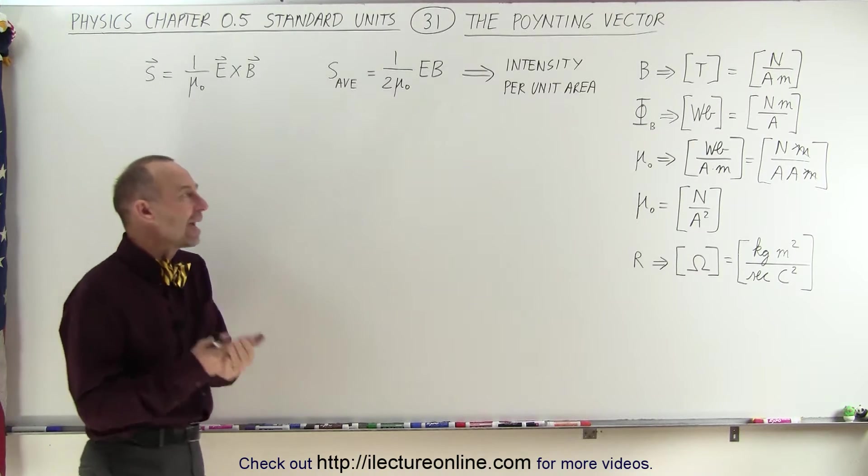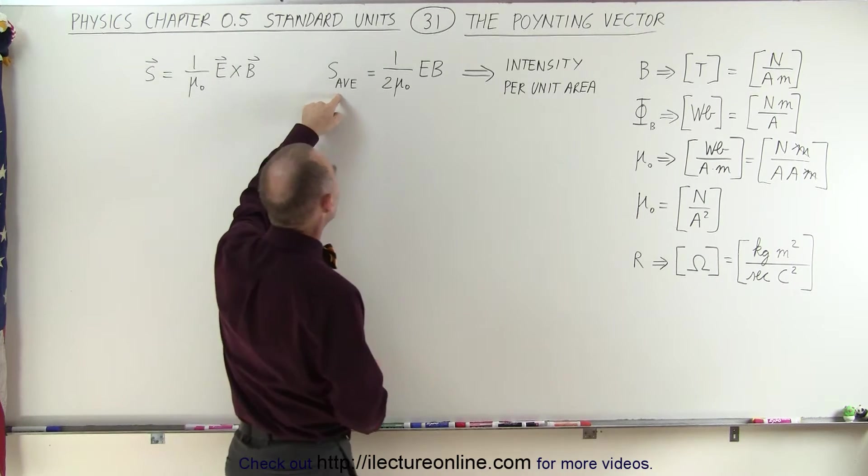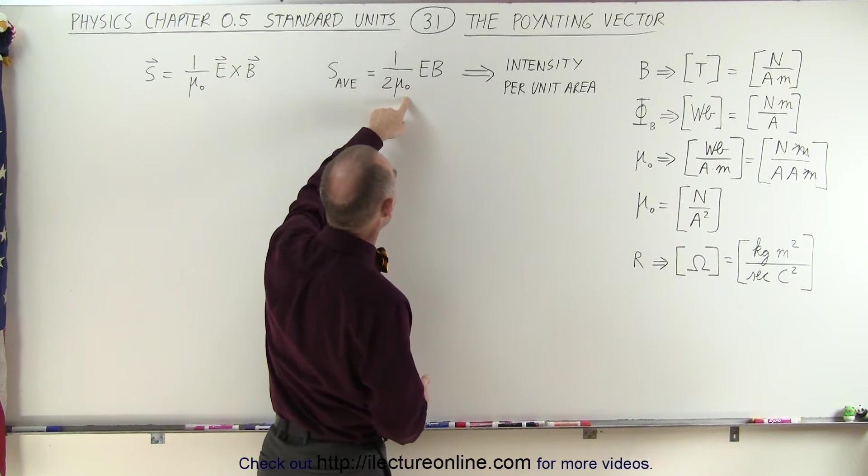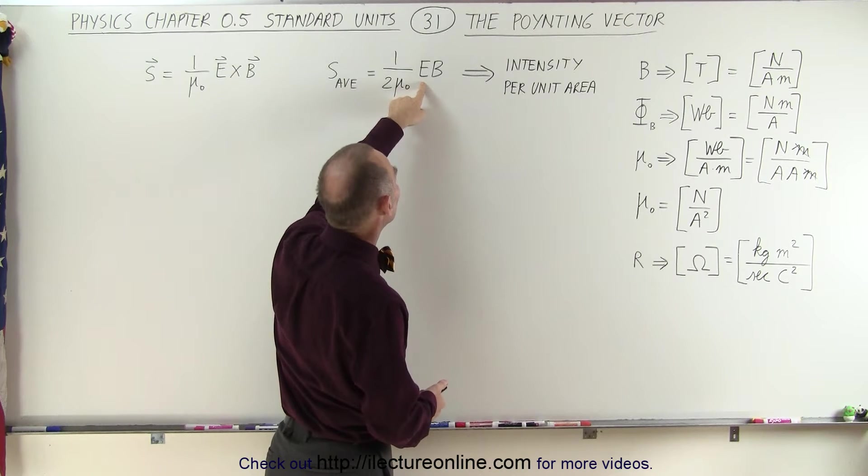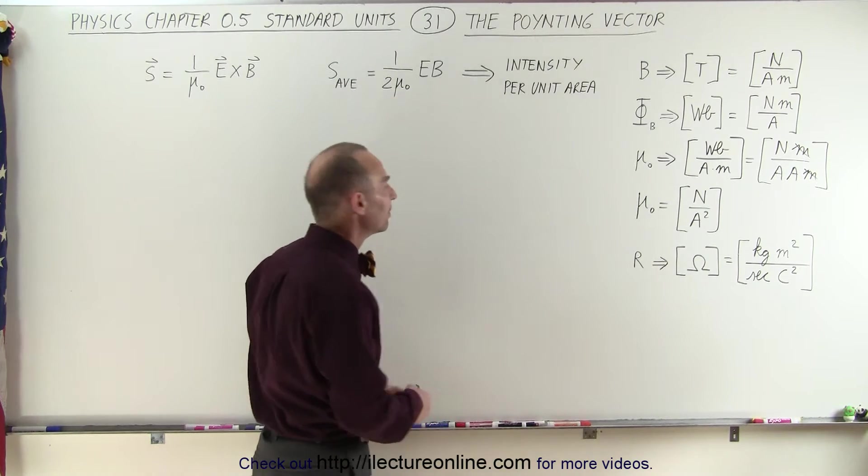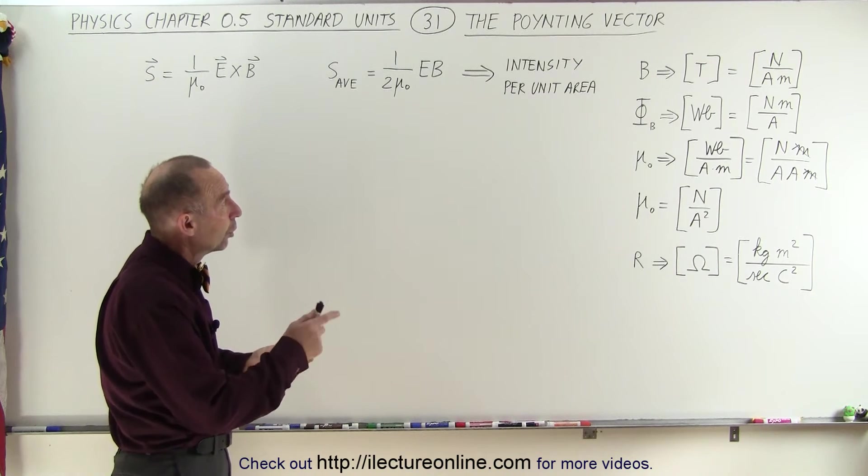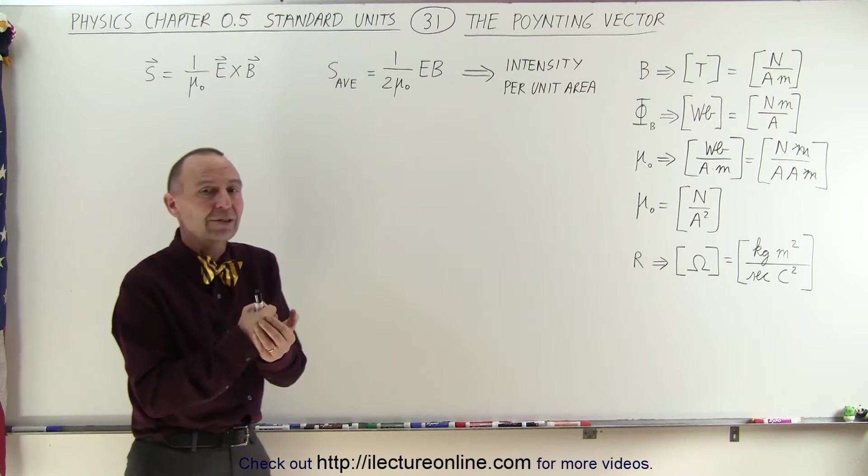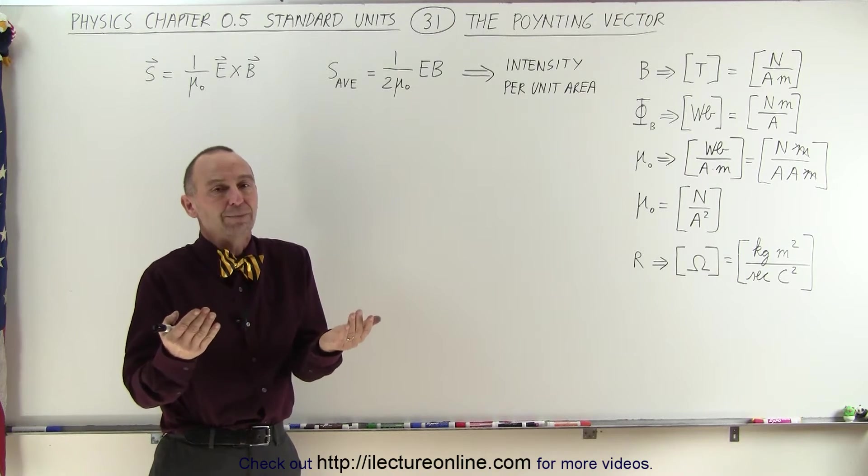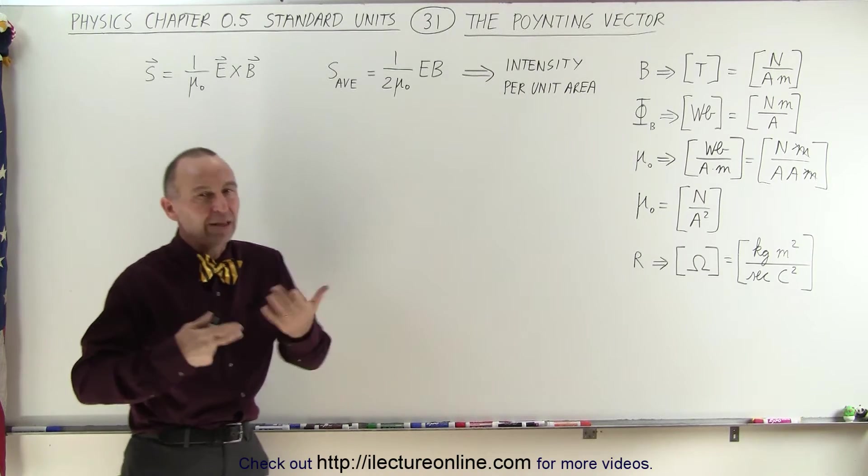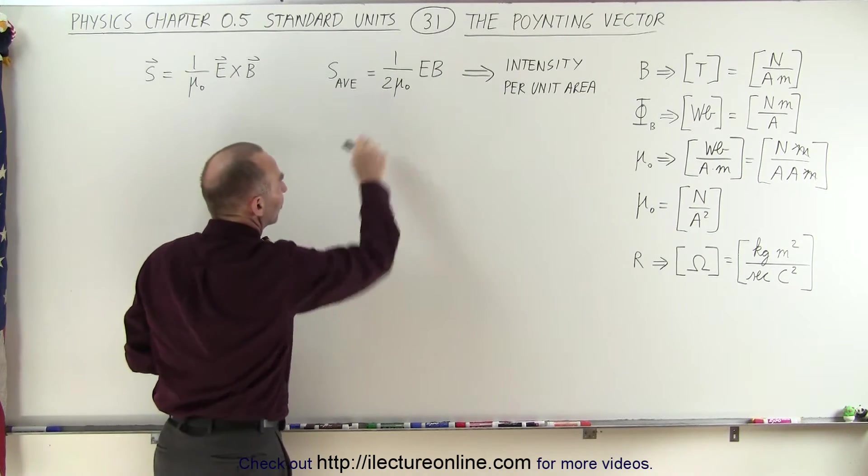We can then say that the average pointing vector value is equal to 1 over 2 mu sub nought times the magnitude of the electric field times the magnitude of the magnetic field. This is equal to the intensity of the electromagnetic radiation per unit area. For example, when you think about the intensity of sunlight, you can define it as this.